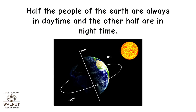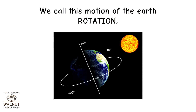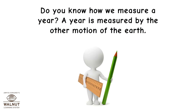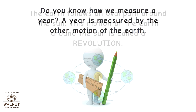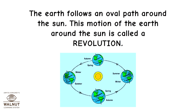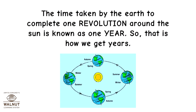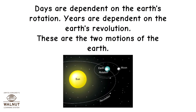Half the people of the Earth are always in daytime and the other half are in night time. We call this motion of the Earth rotation. Do you know how we measure a year? A year is measured by the other motion of the Earth. The Earth follows an oval path around the sun. This motion of the Earth around the sun is called a revolution. The time taken by the Earth to complete one revolution around the sun is known as one year. Days are dependent on the Earth's rotation. Years are dependent on the Earth's revolution. These are the two motions of the Earth.